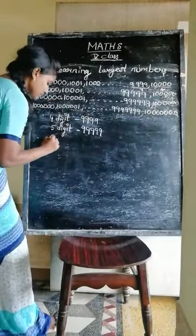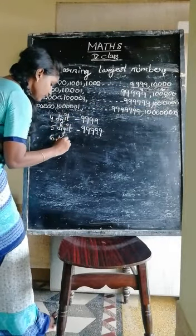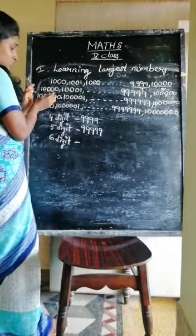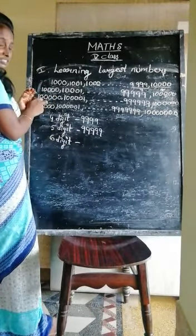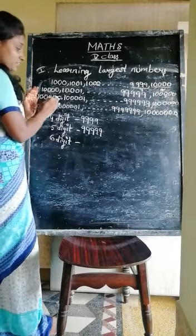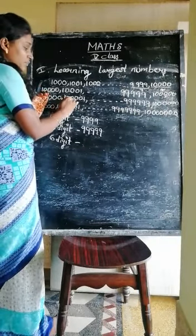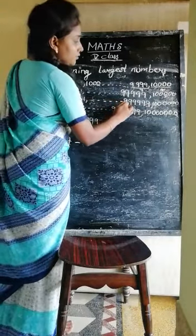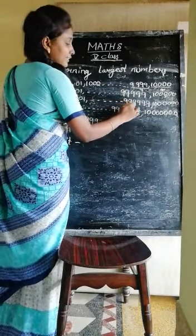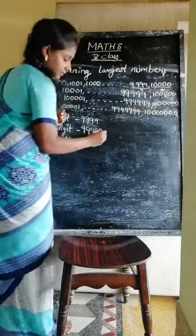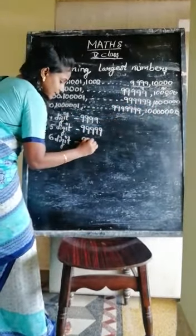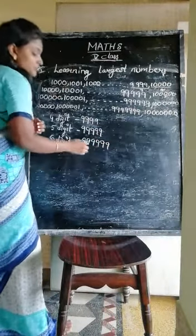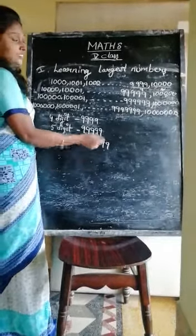Again, the 6-digit number. In 6-digit numbers, this is the smallest number — this is the first number in 6 digits, so it is the smallest number. And 9,99,999 is the 6-digit largest number.